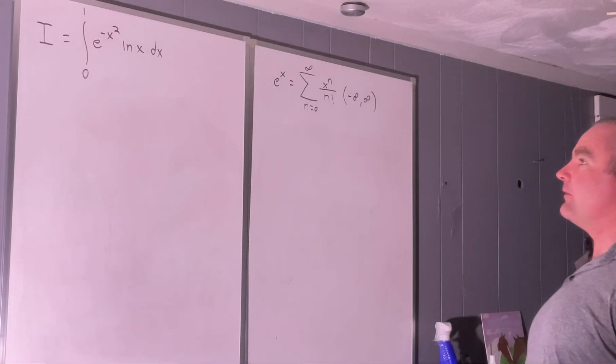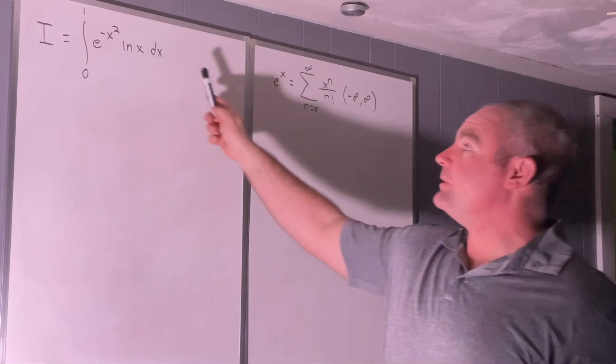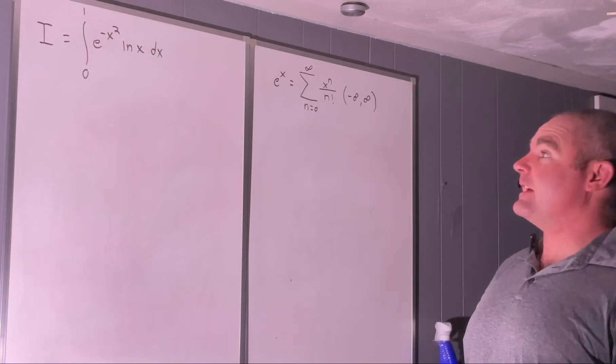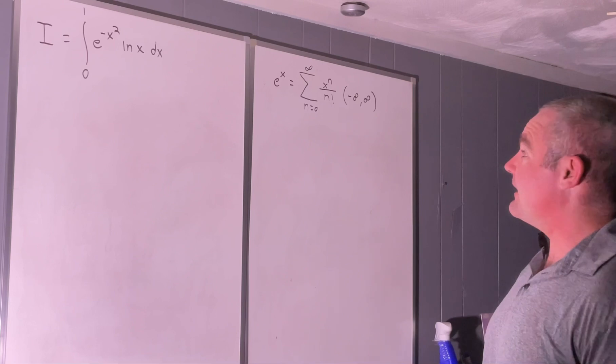Hi everybody, welcome back to my channel on Feynman integration. Today we'll be evaluating this integral, the integral from 0 to 1 of e to the negative x squared times natural log x dx.